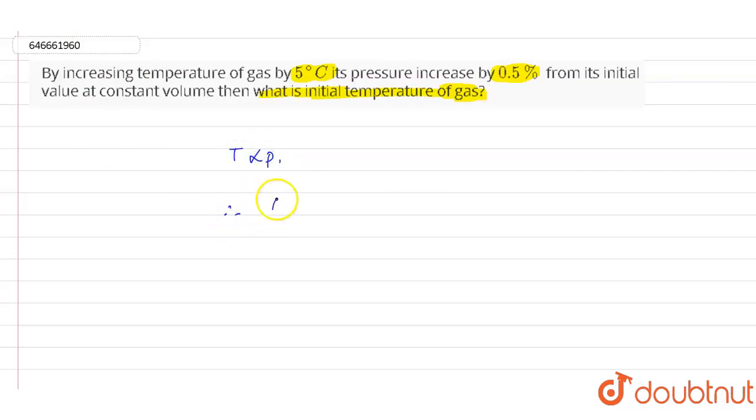In that case we will write delta T, that means change of the temperature, divided by T, multiplied by 100, will be equals to change of the P divided by P into 100. So we can write this as 0.5.